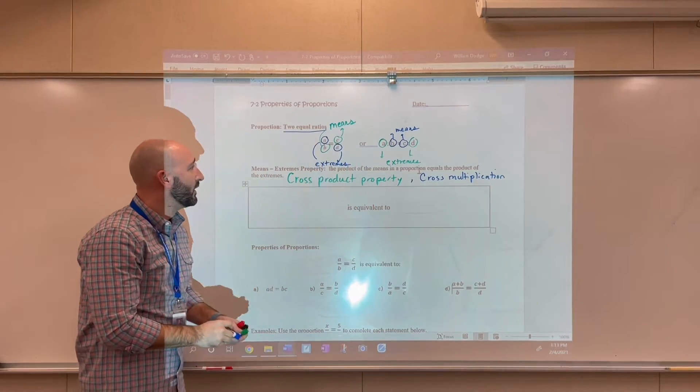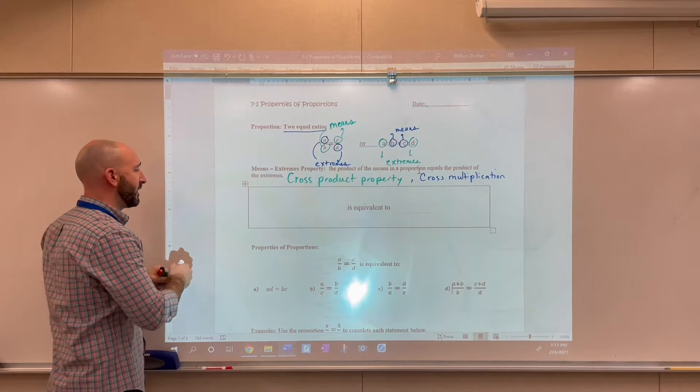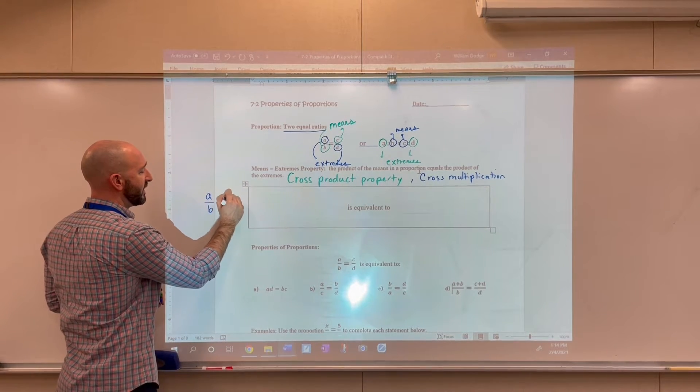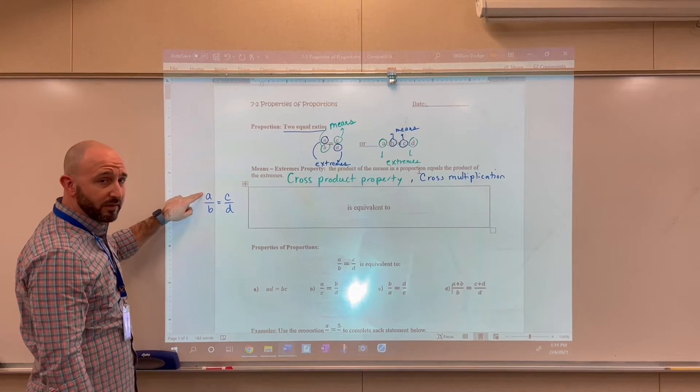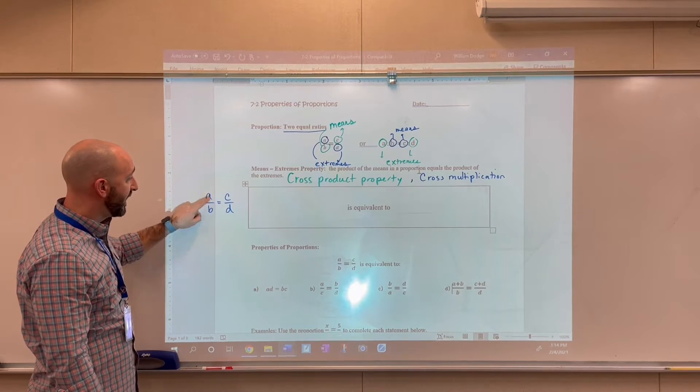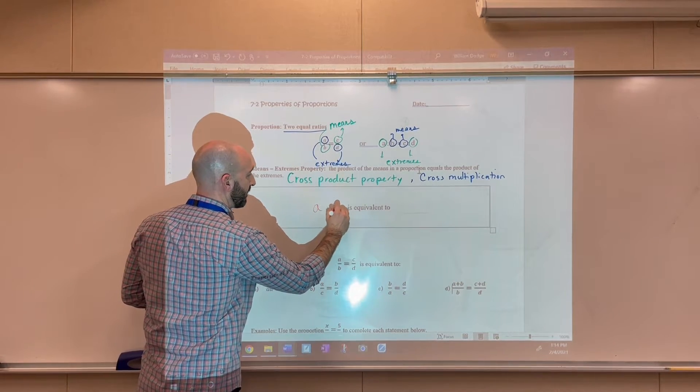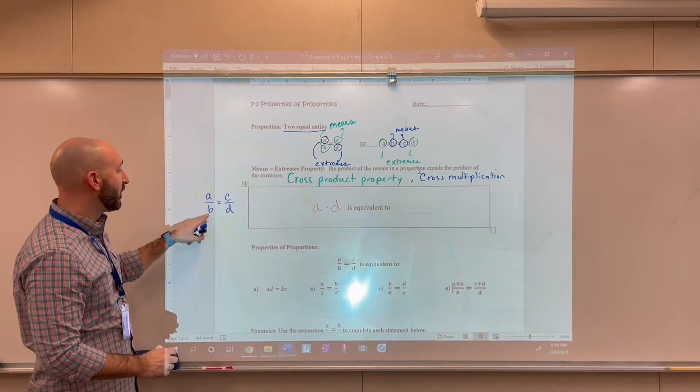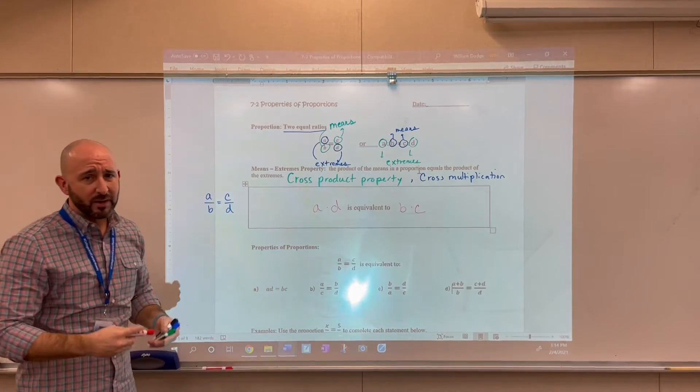All right, so if we look at the original statement up here, and I'm going to rewrite it down here just so it's a little bit easier to see. So we have A is to B as C is to D. So what we can do here is we can multiply the extremes together. So A times D. And that's going to equal the product of the means, so B times C.